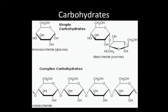Here are some views of different saccharides. Simple saccharides include glucose, which is a monosaccharide with one ring, and sucrose, which is a disaccharide with two rings. We also have complex carbohydrates, which are polysaccharides made up of multiple chains of those rings.